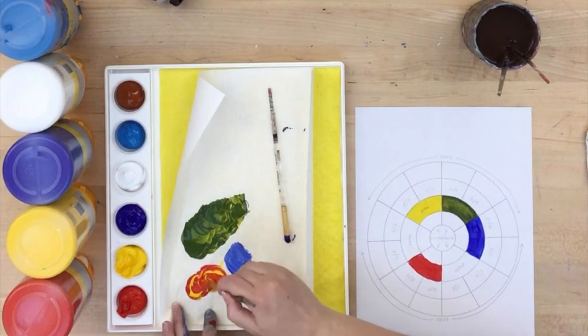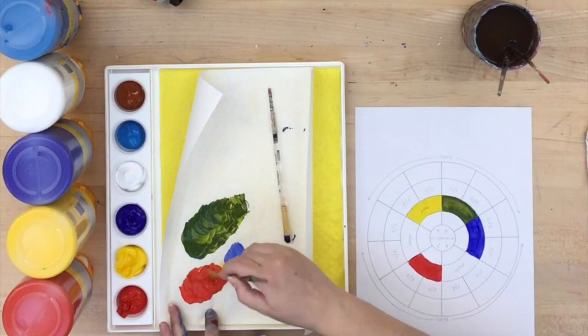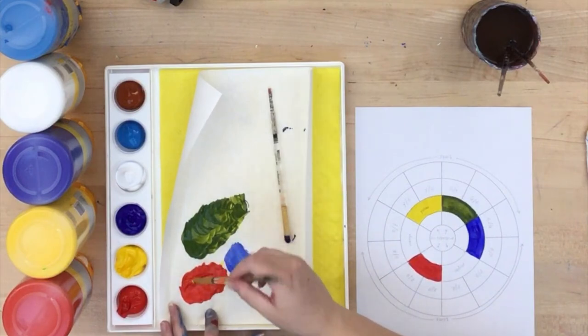Again, make sure you mix it all together. Red is actually the strongest pigment in the entire palette. Look, it doesn't even look like it changed. So I need a lot more yellow.